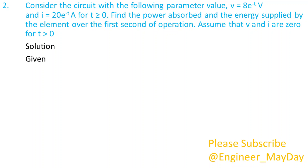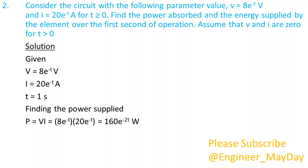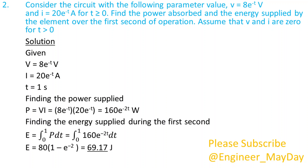Given: V equals 8e to the power negative T volts, I equals 20e to the power negative T amperes, T equals 1 second. Finding the power supplied: P equals 160e to the power negative 2T watts. Finding the energy supplied during the first second: E equals 69.17 joules.